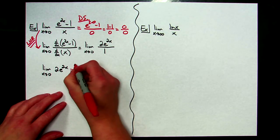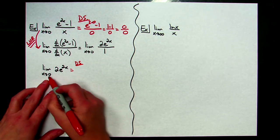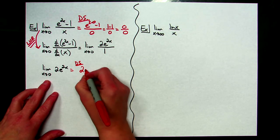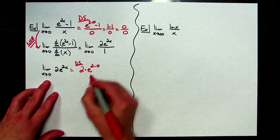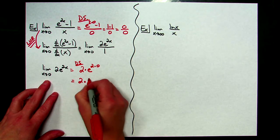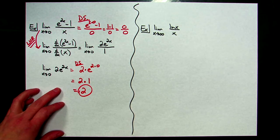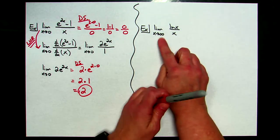Now I'm ready to go back to a direct substitution. As x approaches 0, I have 2 times e to the 2 times 0. Anything raised to the 0 power is 1, so I've got 2 times 1, which is 2. Applying L'Hôpital's Rule one time helped — I've got a limit of 2.